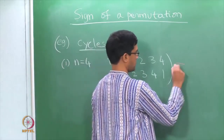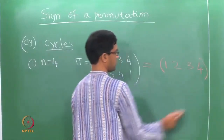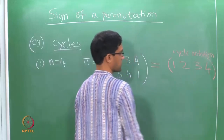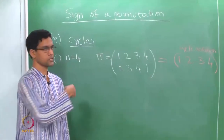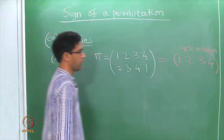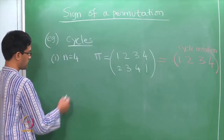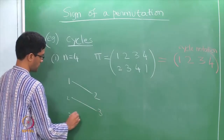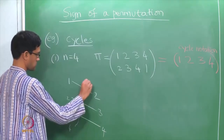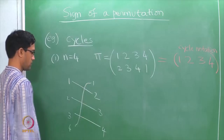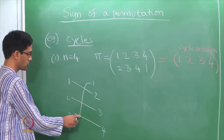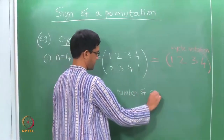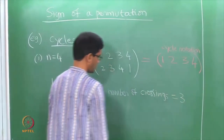In cycle notation, the same permutation is represented as (1, 2, 3, 4) in brackets, meaning 1 goes to 2, goes to 3, goes to 4, goes back to 1. Drawing the tangle diagram: 1 maps to 2, 2 maps to 3, 3 maps to 4, and 4 maps to 1. The number of crossings is 3, so the permutation pi is odd.